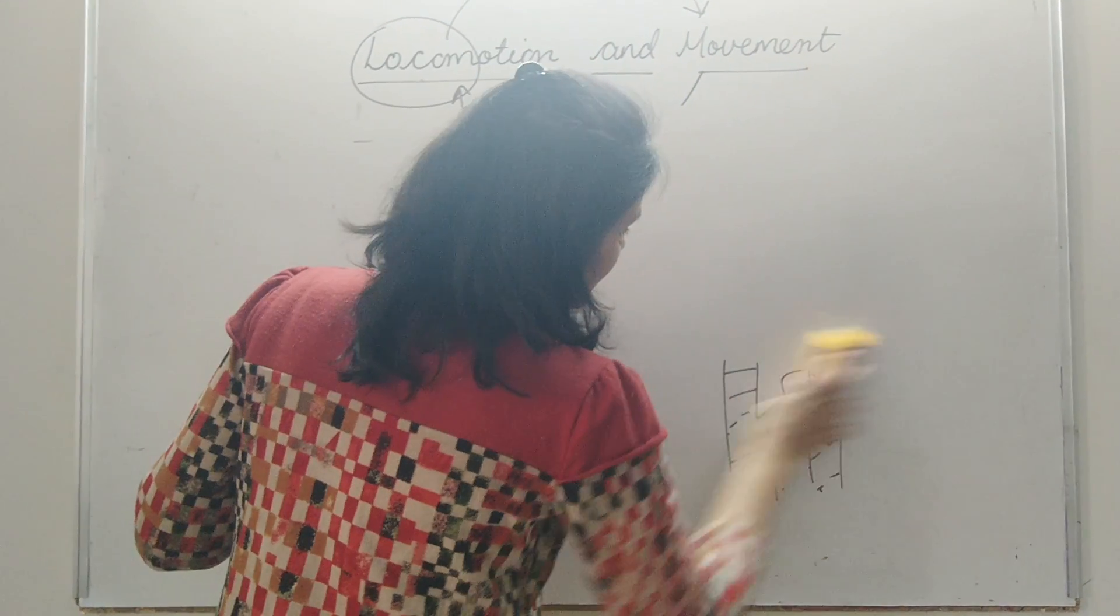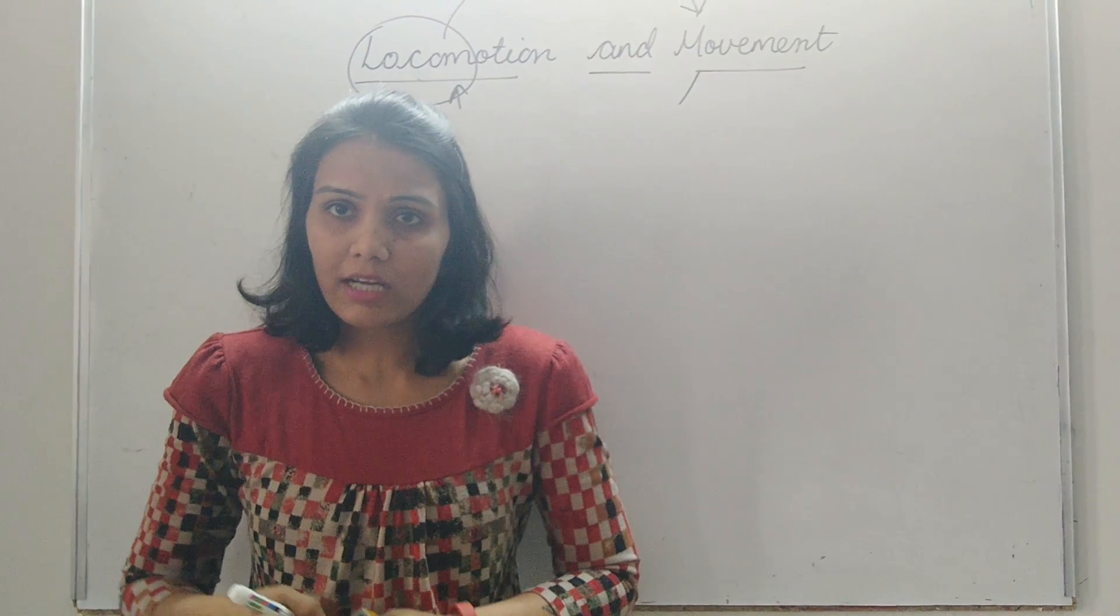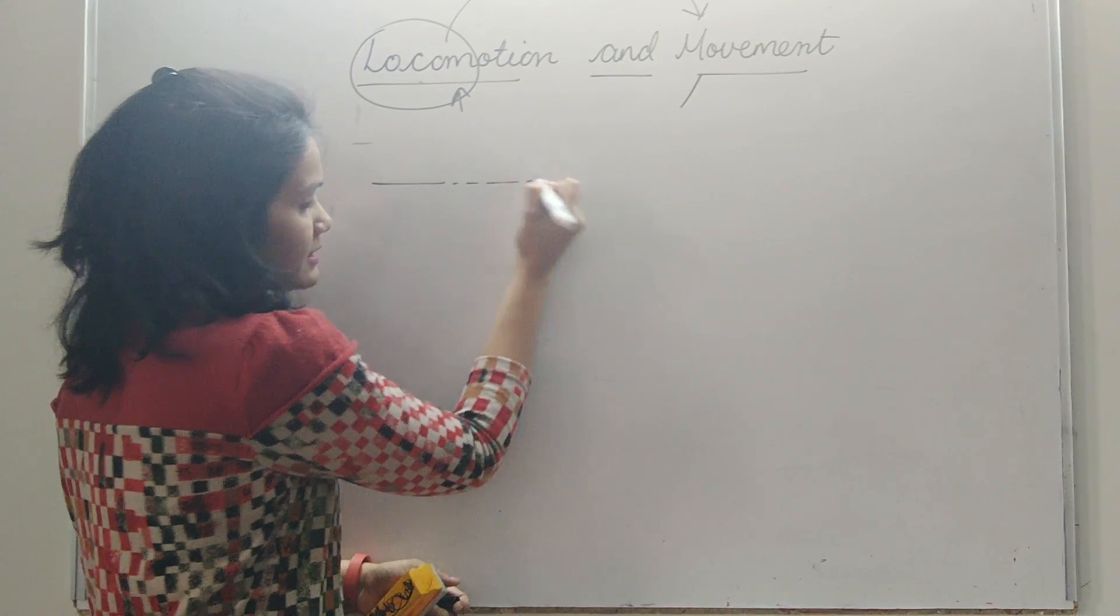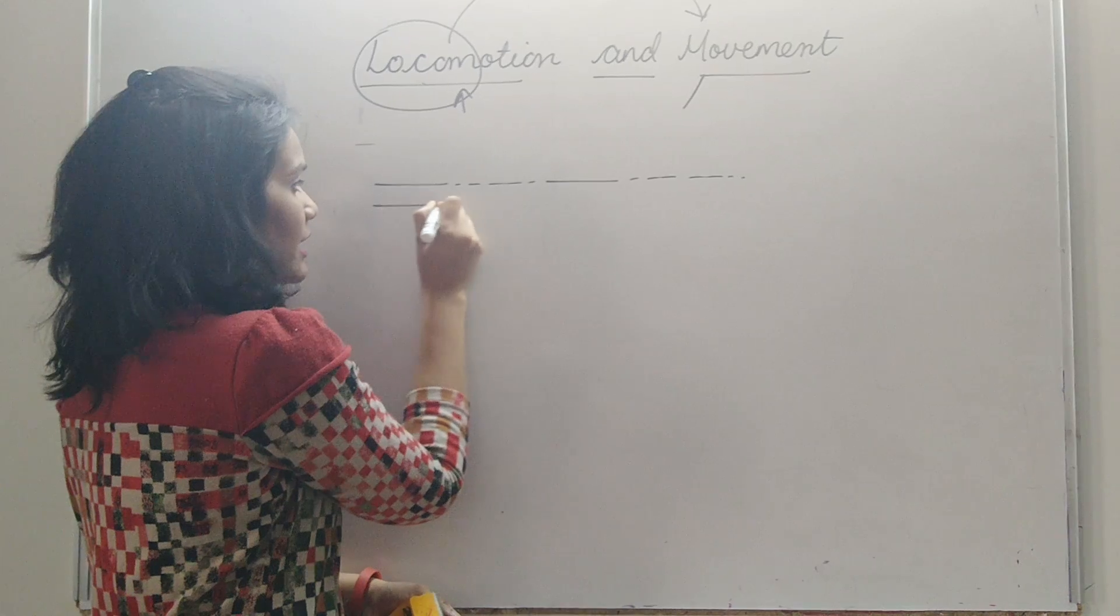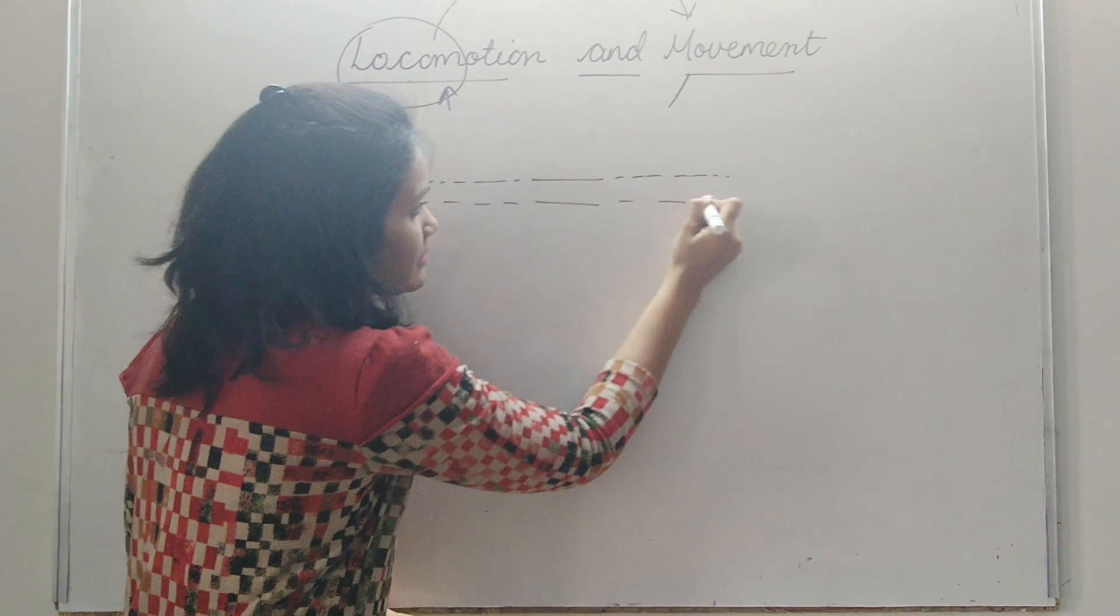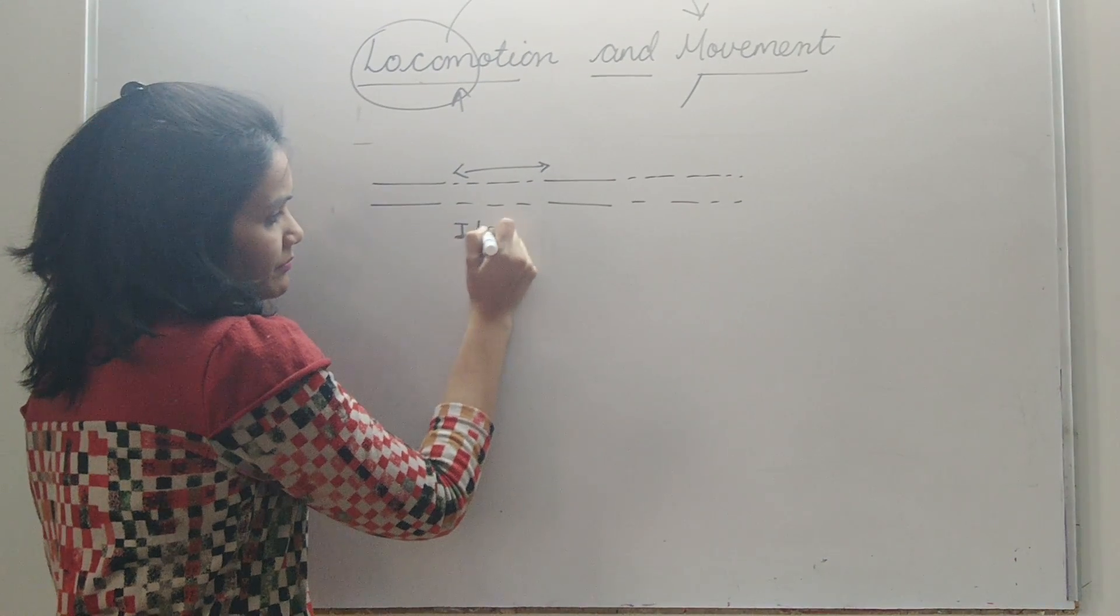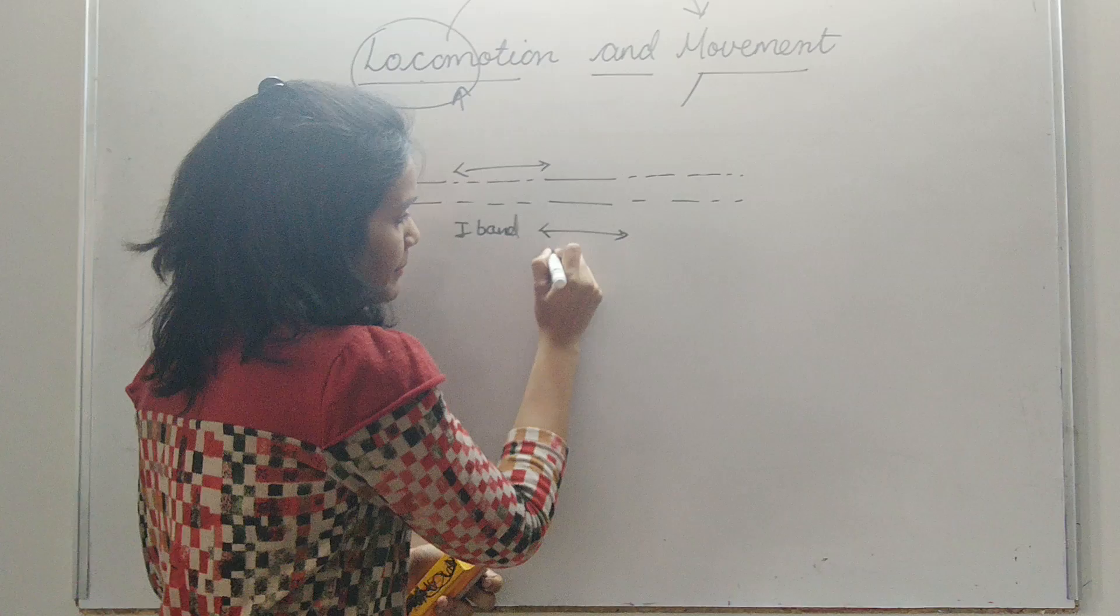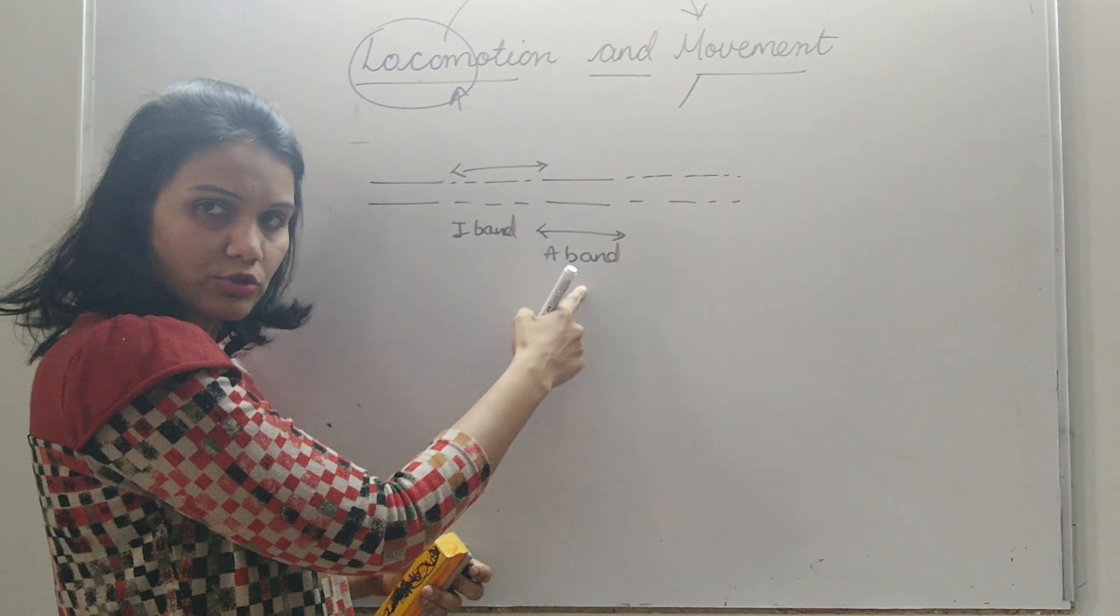Now let us see the anatomy of this skeletal muscle. We said alternate light and dark band. So these are dark bands, this is light band, dark band, light band, dark band, light band. So the light band is called as the I band and the dark band is called as the A band. Isotropic band, anisotropic band.